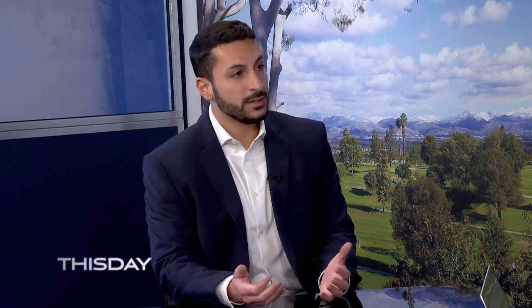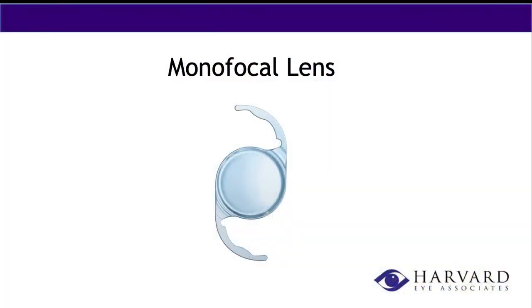So the monofocal lens — this is the traditional lens that's covered by insurance. This is a great lens that's going to give you good vision, but you're going to need glasses for all ranges of vision: distance, intermediate, and near vision. It's good for somebody who is okay wearing glasses and just wants the traditional basic cataract surgery.